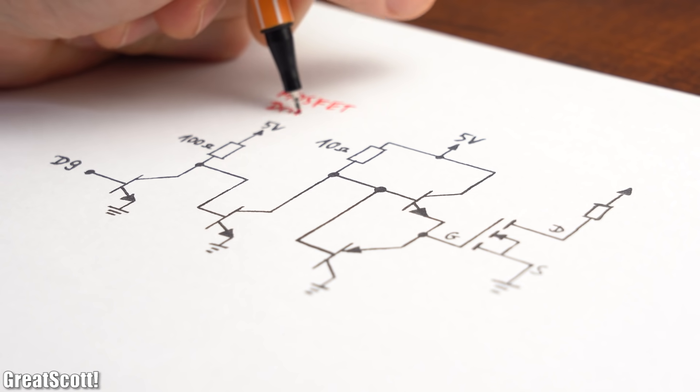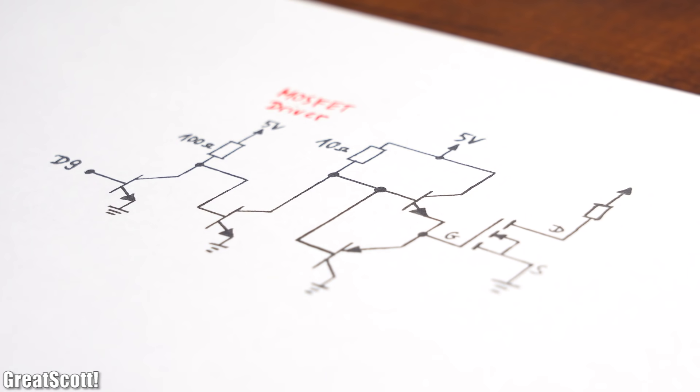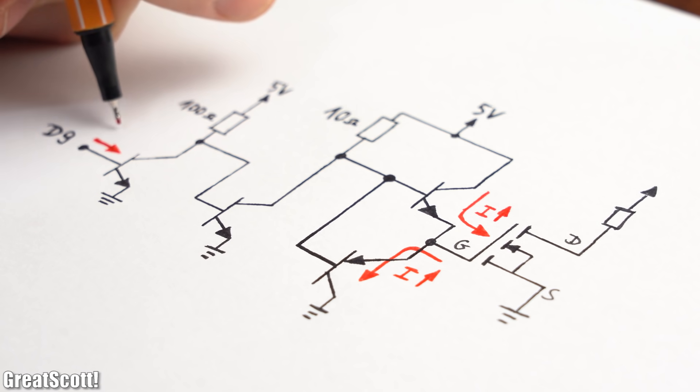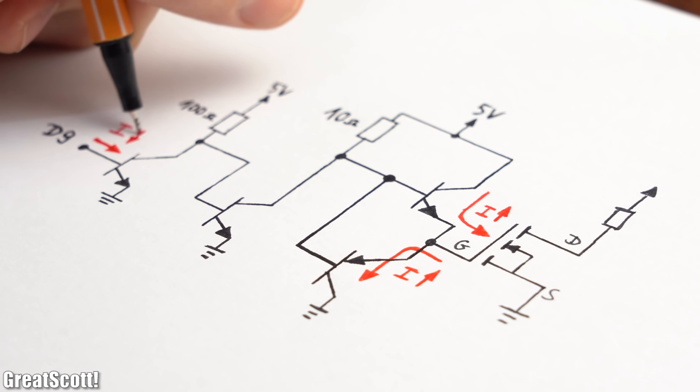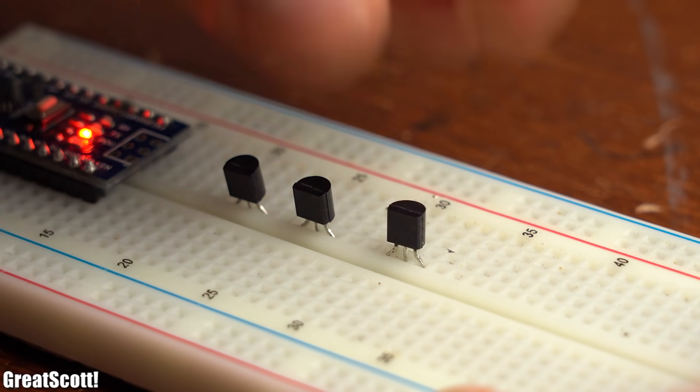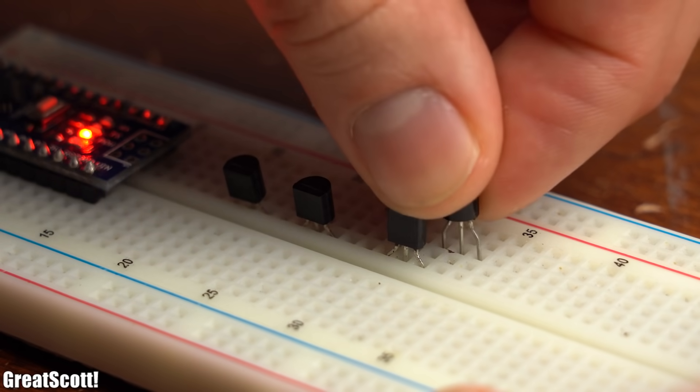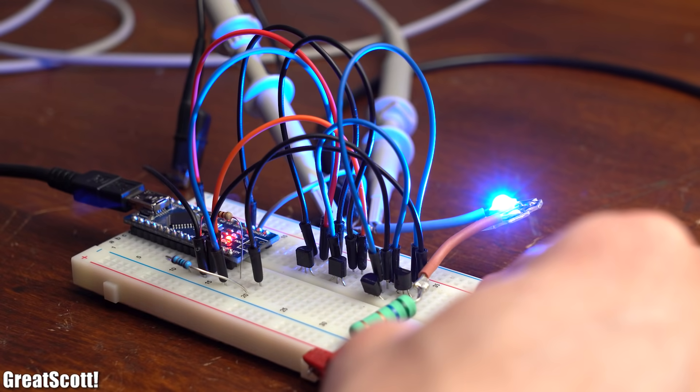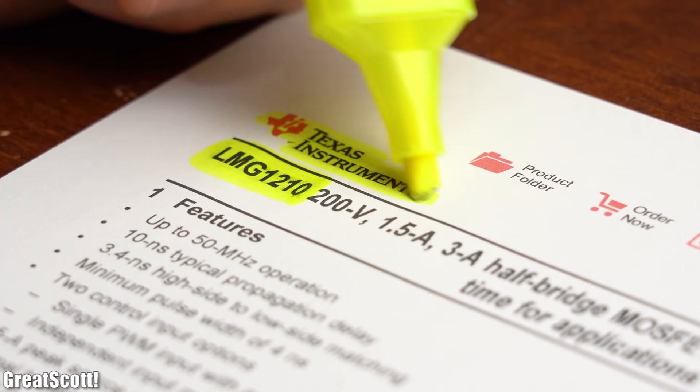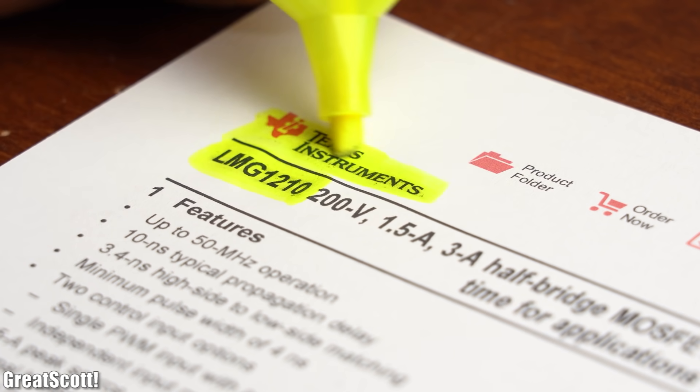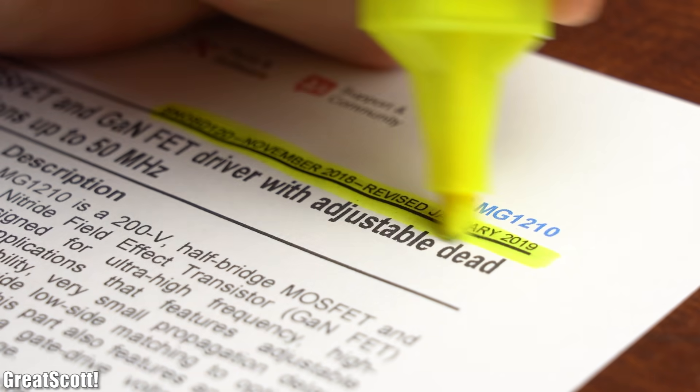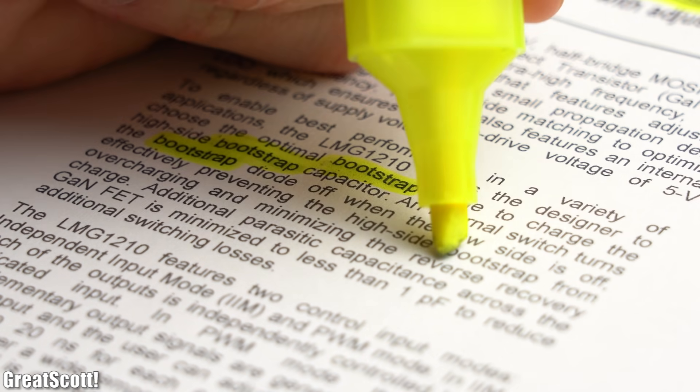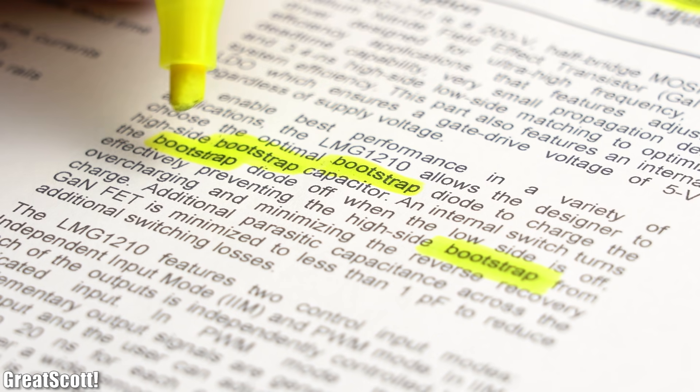For those reasons we can use such a transistor circuit which is often called a MOSFET driver. Its job is to basically feed lots of current quickly into the gate while only drawing a small amount of current from the microcontroller. But since such a circuit requires quite a few components to build up, we can also simply use a MOSFET driver IC. As a practical example I chose the LMG1210 from Texas Instruments which is not only relatively modern but it also comes with a bootstrapping feature which I will talk about later.